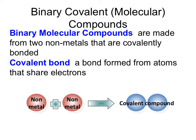Covalent compounds are also known as molecular compounds. They are made from two non-metals that are covalently bonded together. A covalent bond is formed when atoms share electrons. We'll go into a lot more detail about the covalent bond in upcoming chapters.